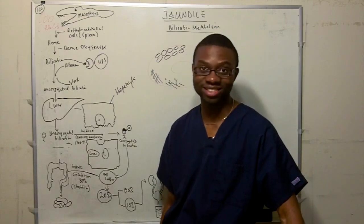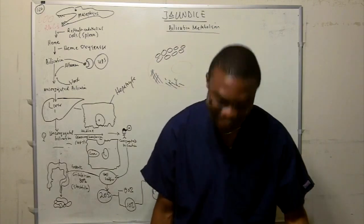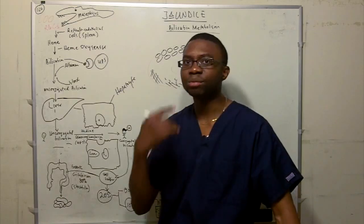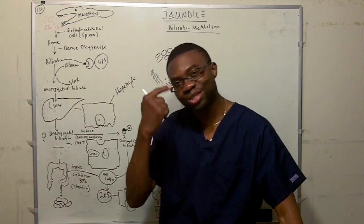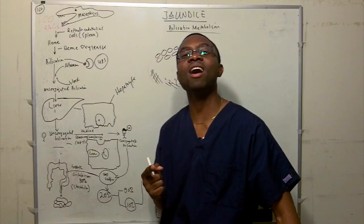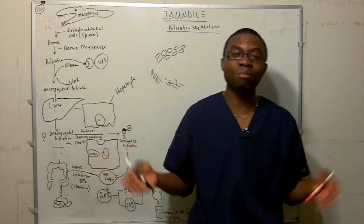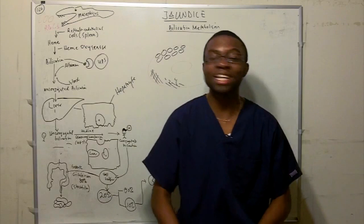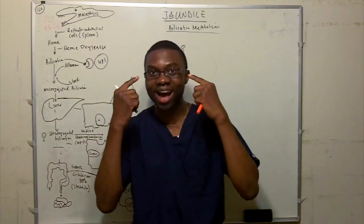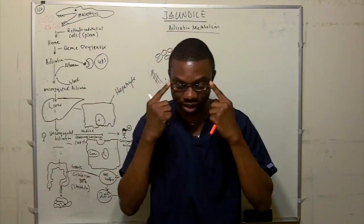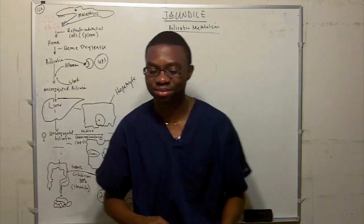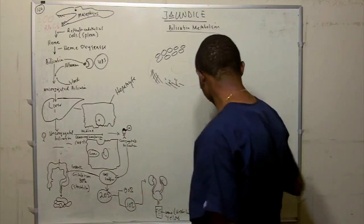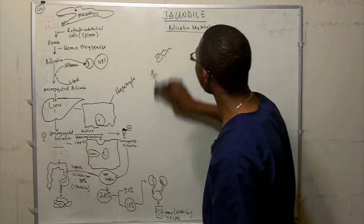Now jaundice makes sense. If bilirubin is normally in the urine keeping it yellow, but instead accumulates in the eyes — your sclera turns yellow. If it spills onto the skin and mucous membranes, that's jaundice. That's the pathophysiology — yellow discoloration due to excess bilirubin.